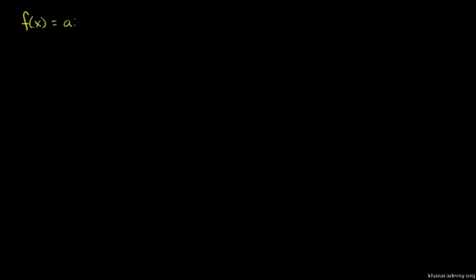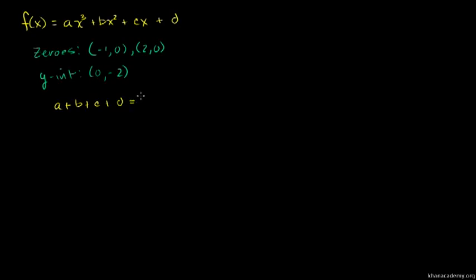A third degree polynomial is equal to ax cubed plus bx squared plus cx plus d. We're looking at a function with zeros, roots of the function at two points. The function is zero at (-1, 0) and (2, 0). The y-intercept is at point (0, -2).